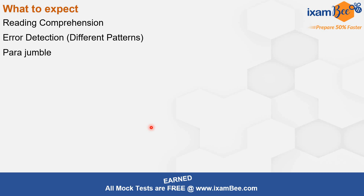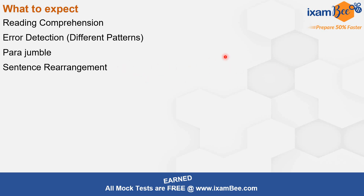We are also seeing questions based on sentence rearrangement. Para jumble is when you are given one paragraph and the sentences of that paragraph are jumbled among themselves. Sentence rearrangement is when you are given one sentence, that sentence is divided into parts, and those parts are jumbled — so you have to arrange the parts to form a meaningful sentence. In para jumble you form an entire paragraph; in sentence rearrangement, just one sentence.